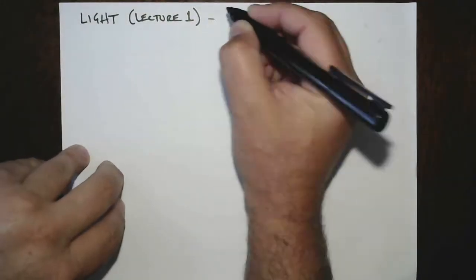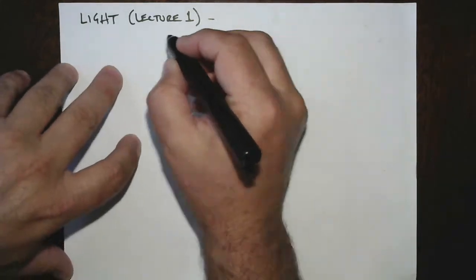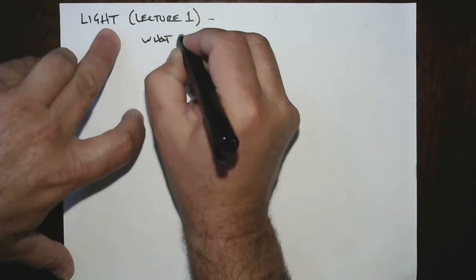All right, all you cool cats and kittens, we got a lecture today on light. We're going to have two lectures on light, at least, and then we're going to talk about optics separately. So today we're going to talk about what light is and some other things about light. What is light?